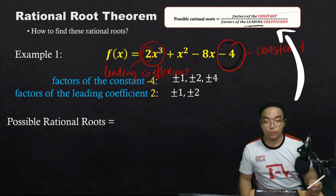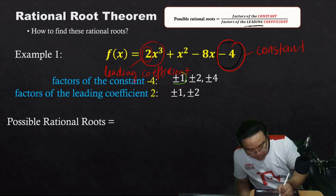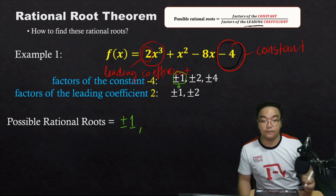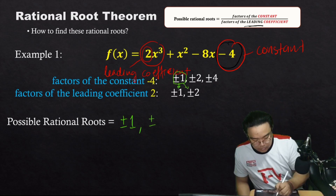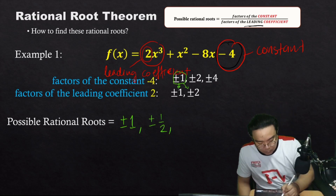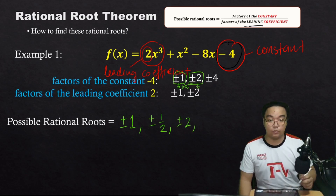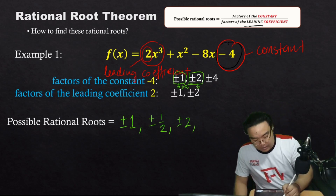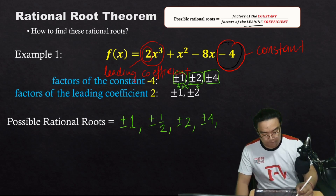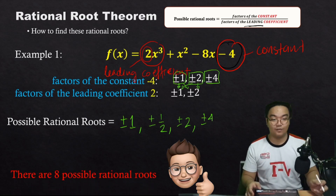Based on the theorem, we divide the factors of the constant by the factors of the leading coefficient. Dividing ±1 by ±1 gives ±1; dividing ±1 by ±2 gives ±1/2; dividing ±2 by ±1 gives ±2; dividing ±2 by ±2 gives 1 (no need to rewrite). Finally, dividing ±4 by ±1 gives ±4, and dividing ±4 by ±2 gives ±2. So all in all there are eight possible rational roots for this polynomial.